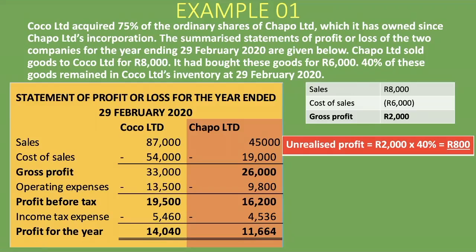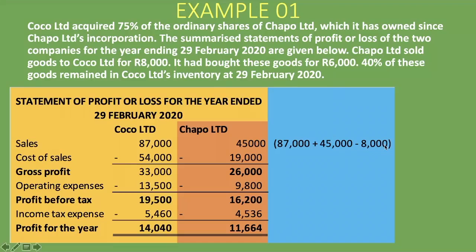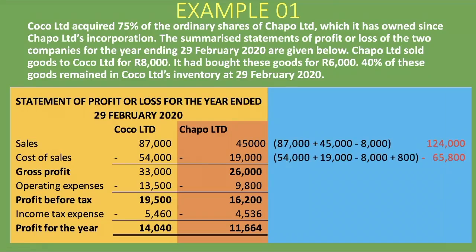So it's 87,000 rand plus 45,000 rand minus 8,000 rand, giving total group sales of 124,000 rand. For cost of sales, we add the parent's and subsidiary's cost of sales, deduct the 8,000 rand purchases made by the parent from the subsidiary, and then add back the 800 rand unrealized profit, giving 65,800 rand. It's important to note that adding the 800 rand to cost of sales reduces our profits — the bigger the cost of sales, the less the profit.